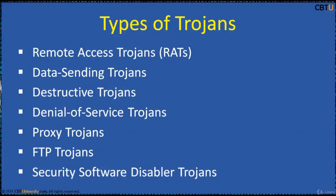Trojans can be created and used to perform different attacks. Here are some of the most common types. RATs (Remote Access Trojans) are used to gain remote access to a system. Data-sending Trojans scan the system, find data, and deliver it to the hacker. Destructive Trojans are used to delete or corrupt files on the system. Denial of Service Trojans are used to launch DoS or DDoS attacks on the target.